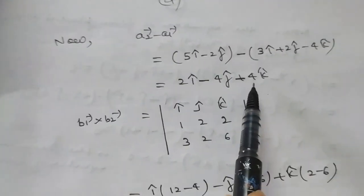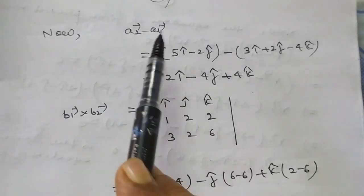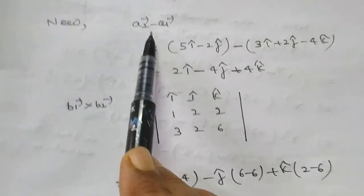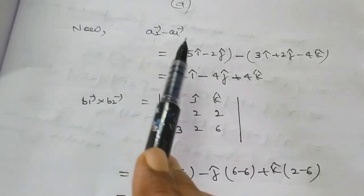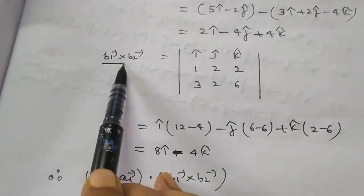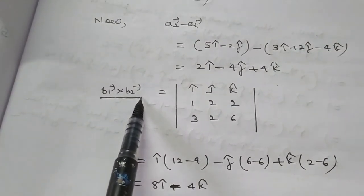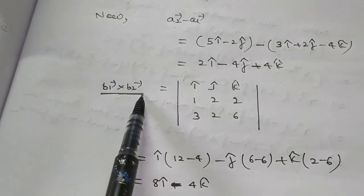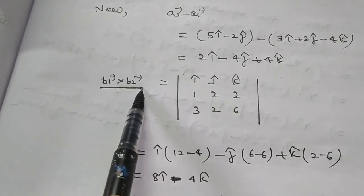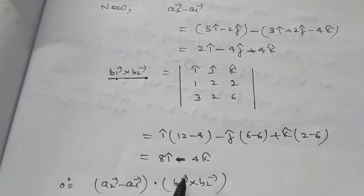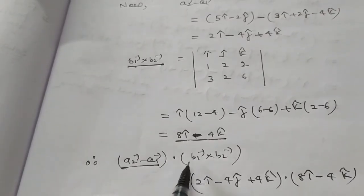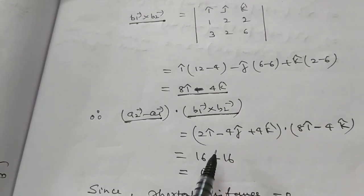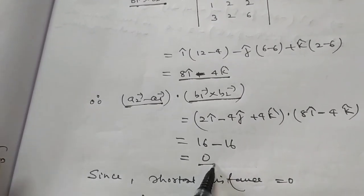I want to find vector a2 minus a1. This gives the vector between two points lying on the first and second lines. For the perpendicular on the plane we take the cross product of b1 and b2, and it gives a single vector 8i - 4k. So (a2 - a1) dot (b1 cross b2) = 0. So the shortest distance is 0, meaning the lines are intersecting.